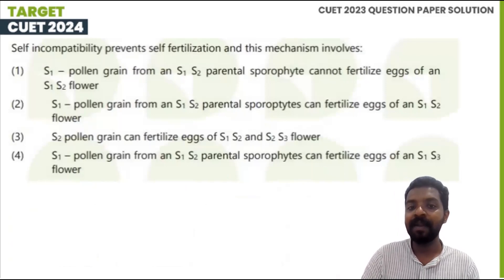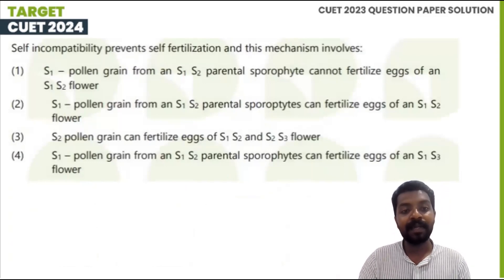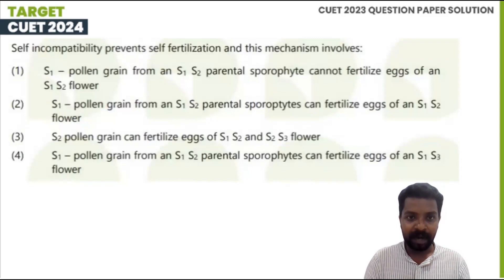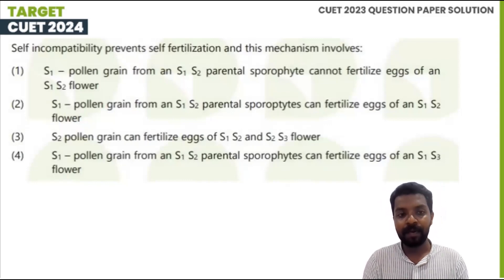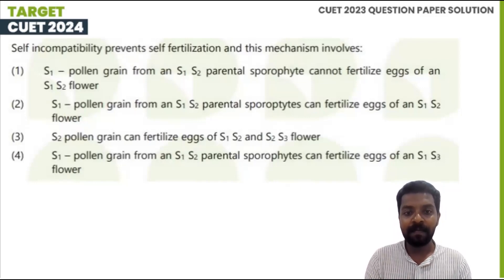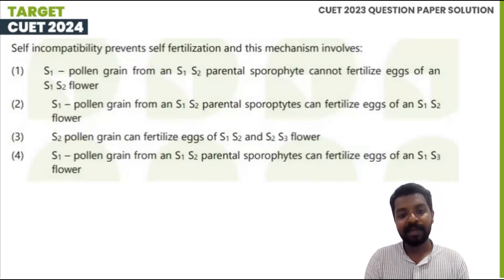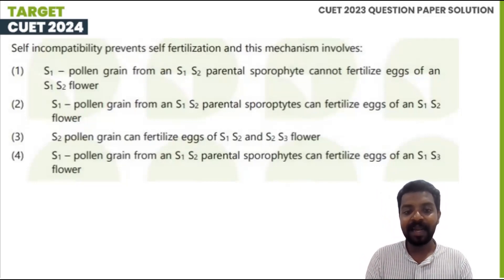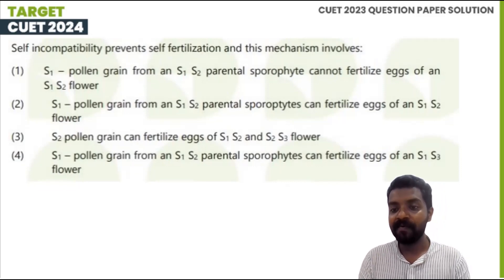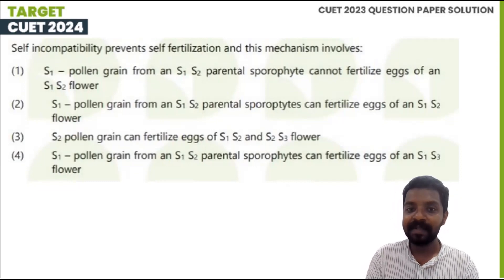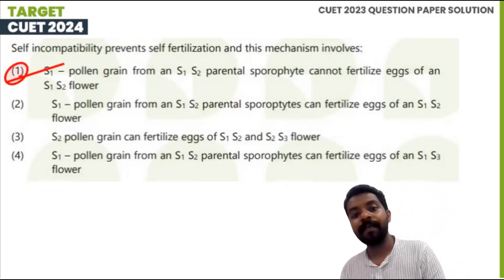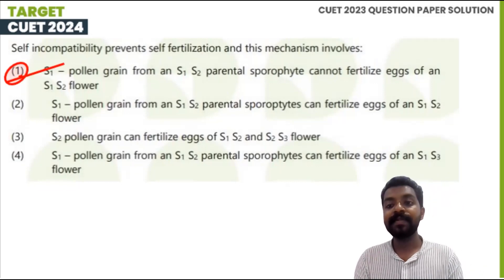Self-incompatibility prevents self-fertilization, and this mechanism involves: S1 pollen grains from S1 and S2 plants cannot fertilize eggs of S1 and S2 flowers. S2 pollen grains can fertilize eggs of S1, S2, and S3 flowers. This is the correct mechanism.